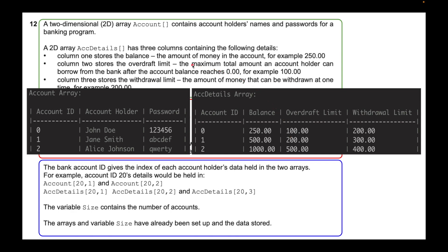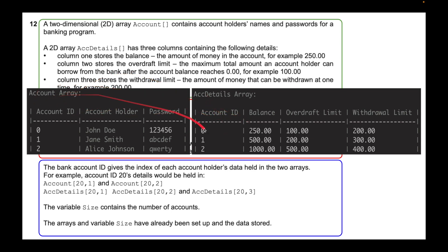To make it clearer: account holder number 0 — for example John Doe — is the first column in the account array, with the password as the second value. In the account details array, position 1 is the balance, position 2 is the overdraft limit, and position 3 is the withdrawal limit. The same account ID links both arrays together, so the data is tied to the same person.